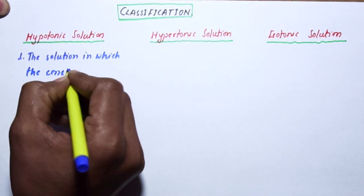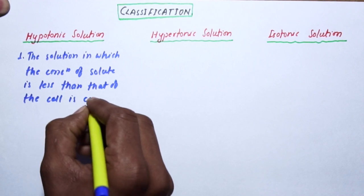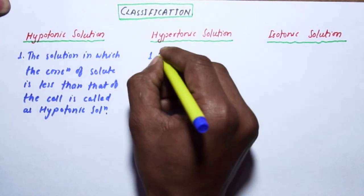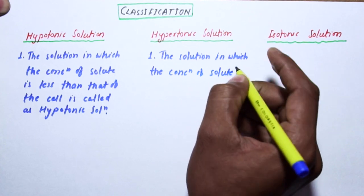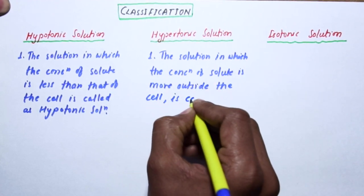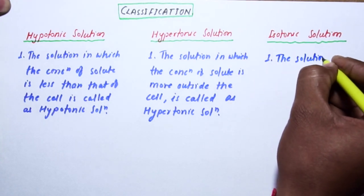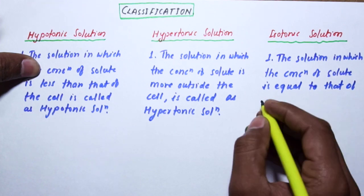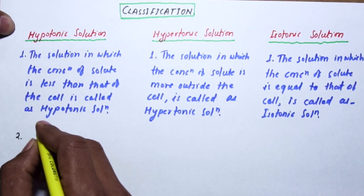The solution in which the concentration of solute is less compared to that of the cell is called hypotonic solution. The solution in which the concentration of solute is more than the cell is called hypertonic solution. The solution in which the concentration of solute is equal to that of the cell is called isotonic solution.